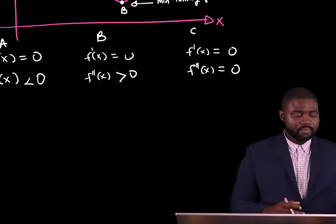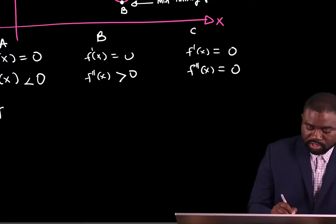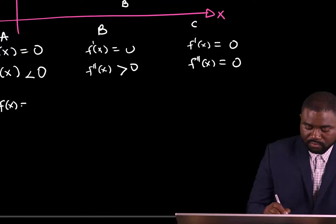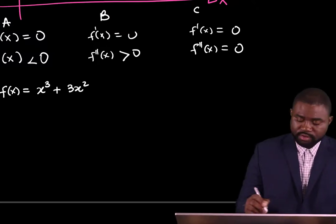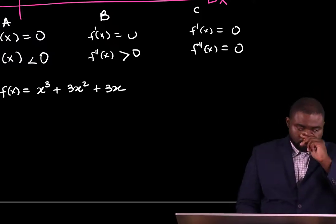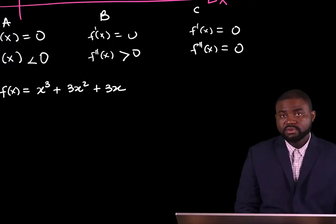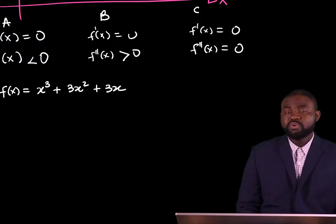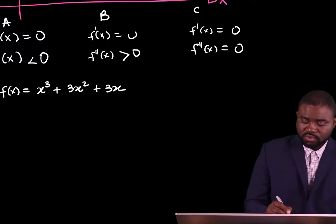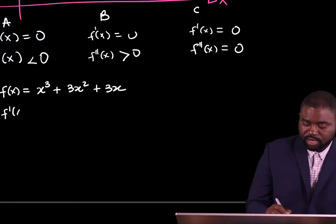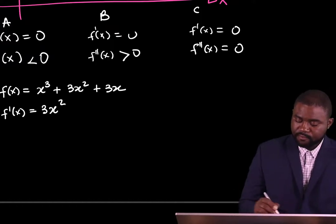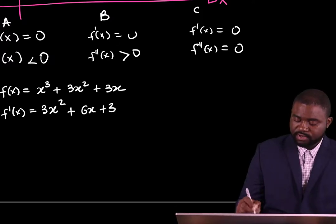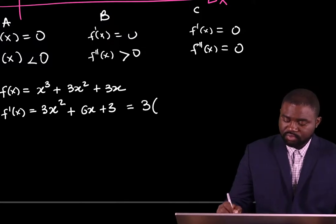Let me do an example. Let's say we have a function f of x equal to x cubed plus 3x squared plus 3x. Our task is to determine what turning points this graph has. So let's start by looking at f prime of x. This is equal to 3x squared plus 6x plus 3, which is the same as 3 times the bracket x squared plus 2x plus 1.